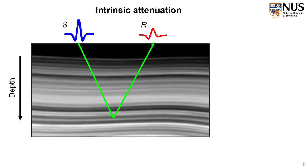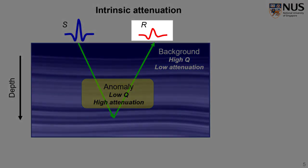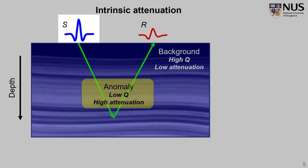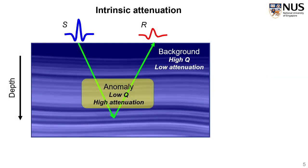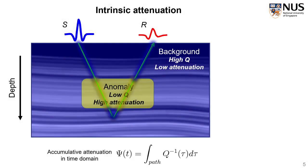That is saying, for most background area, the Q value is high and the attenuation rate is low, but for certain area, the Q value is abnormally low, causing high attenuation. At the surface, the recorded waveform will show significant amplitude decay and phase distortion in comparison with the source wavelet, because the wave path has traveled through this low Q anomaly area. To quantify such cumulative attenuation directly shown in the data domain, we have utilized this parameter called attenuated travel time, ψ(t), which is defined as the integration of Q^(-1)(τ) along certain wave paths.